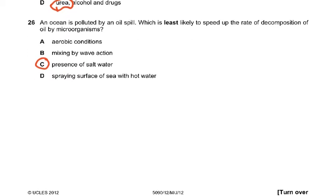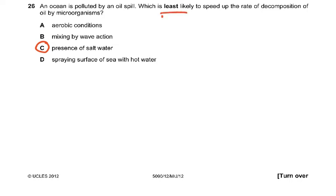Question 26: An ocean is polluted by an oil spill, which is least likely to speed up the rate of decomposition? So least likely means the others are more likely. Aerobic conditions, more likely. Mixing by wave action, more likely because air is being incorporated. Spraying surface of sea with hot water speeds up decomposition because warmer temperature increases enzyme activity of bacteria. So if you add salt water, that is not going to in any way speed up the rate of decomposition. Decomposition is done by bacteria and fungi, and they release enzymes and digest the oil spills.